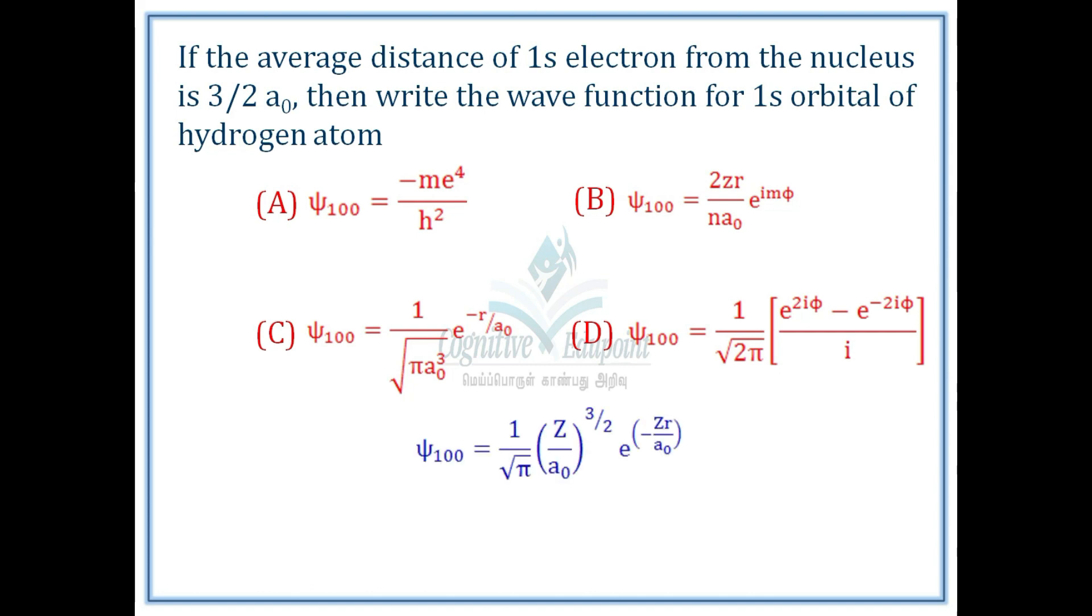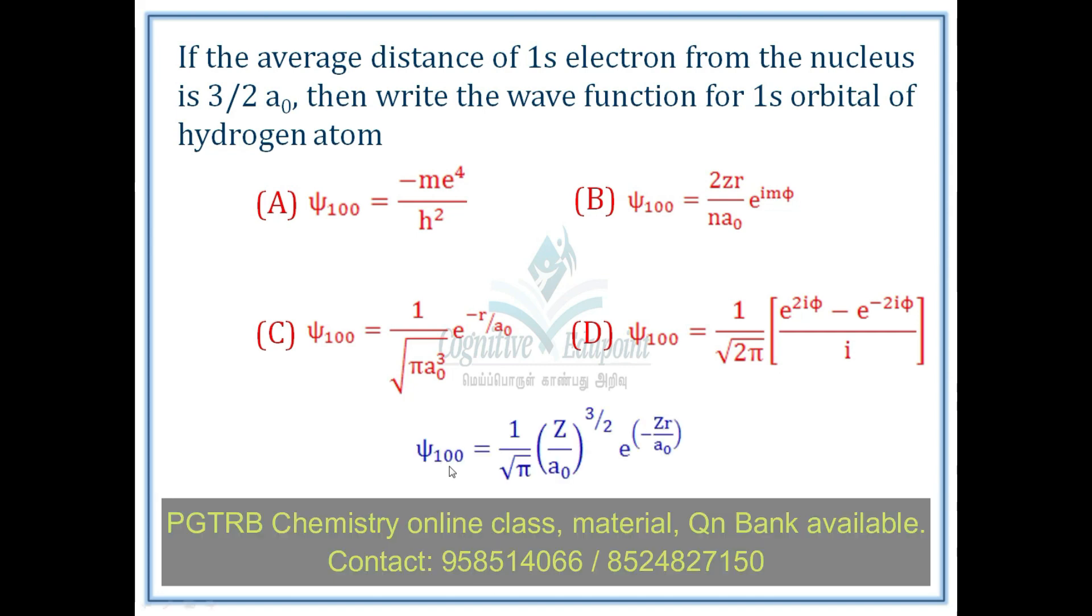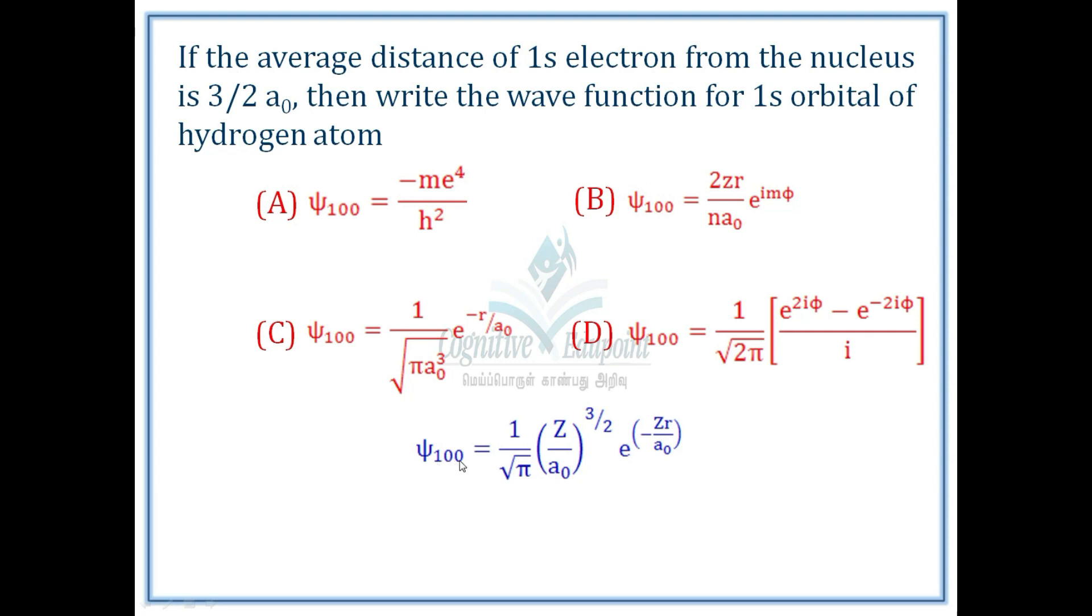Generally, for 1s orbital wave function, ψ₁₀₀ with principle quantum number 1, L=0: 1/√π × (z/a0)^(3/2) × e^(-zr/a0). This is the general expression of wave function of 1s orbital of hydrogen-like atoms.